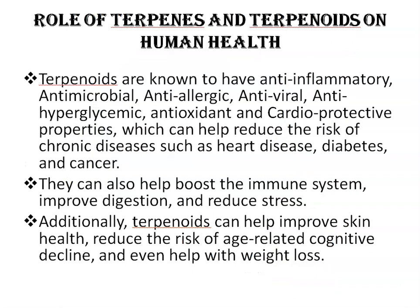Regarding the role of terpenes and terpenoids in human health — terpenoids are known to have anti-inflammatory, antimicrobial, antiviral, anti-hyperglycemic, antioxidant, and cardioprotective properties, which can help reduce the risk of chronic diseases like heart disease, diabetes, and cancer. They can also help boost the immune system, improve digestion, and reduce stress. Additionally, terpenoids can help improve skin health, reduce the risk of age-related cognitive decline, and even help with weight loss.